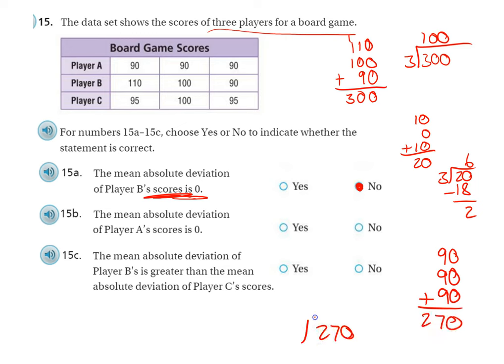270 divided by 3 is 90. And let's see how far away from the mean. 90 is zero away. 90 again is zero away. And 90 again is zero away. Add that all up, divide by 3. Yeah, zero. So yes, that is true.